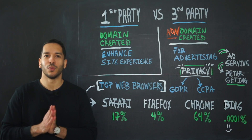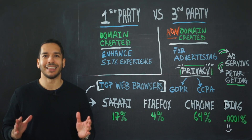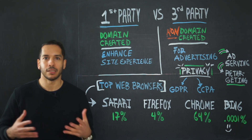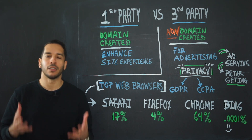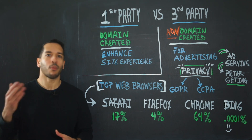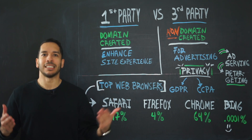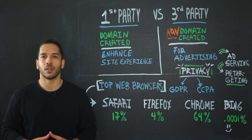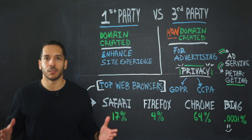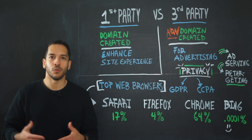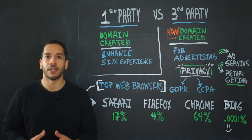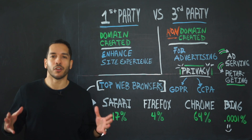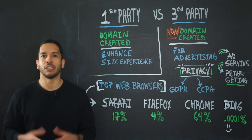These types of changes in the regulatory environment have signaled to internet companies that they need to update their outdated cookie-based technology systems and find a balance between privacy and user identification. So we're moving into a future where there's going to be a lot more transparency in how companies use consumer data for their own profitability.